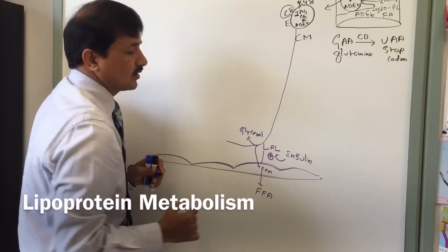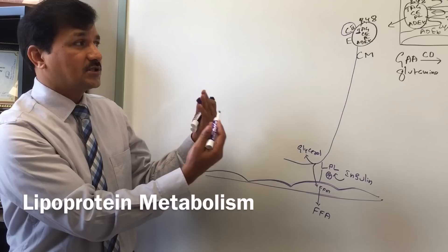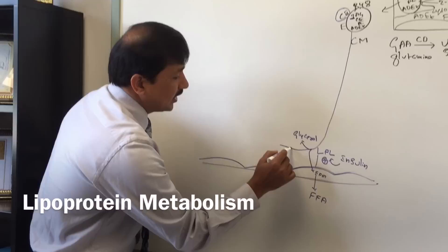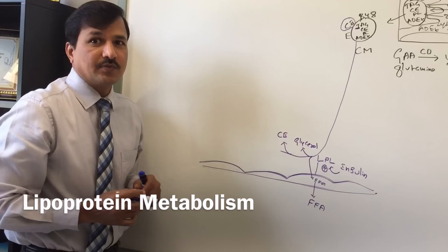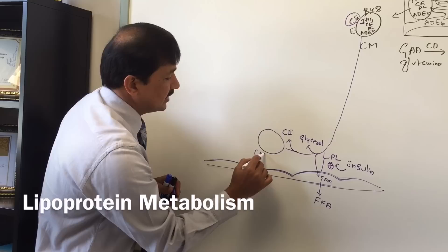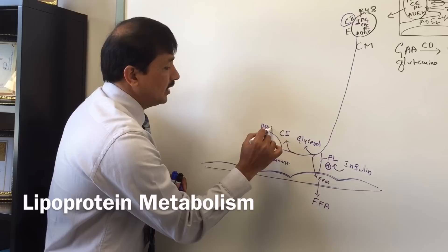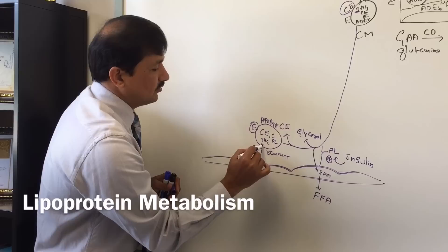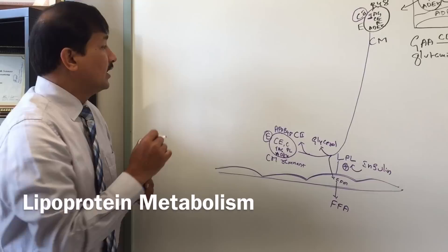Chylomicron metabolism occurs under the well-fed condition. Insulin stimulates lipoprotein lipase — in the presence of insulin, LPL expression increases, increasing chylomicron metabolism. With continuous LPL action and degradation of triacylglycerol, ApoC2 is eventually released back to HDL. At that point, the molecule is called a chylomicron remnant. The chylomicron remnant now contains ApoB48, ApoE, and is enriched in cholesterol ester, with some triacylglycerol, phospholipid, and fat-soluble vitamins remaining.